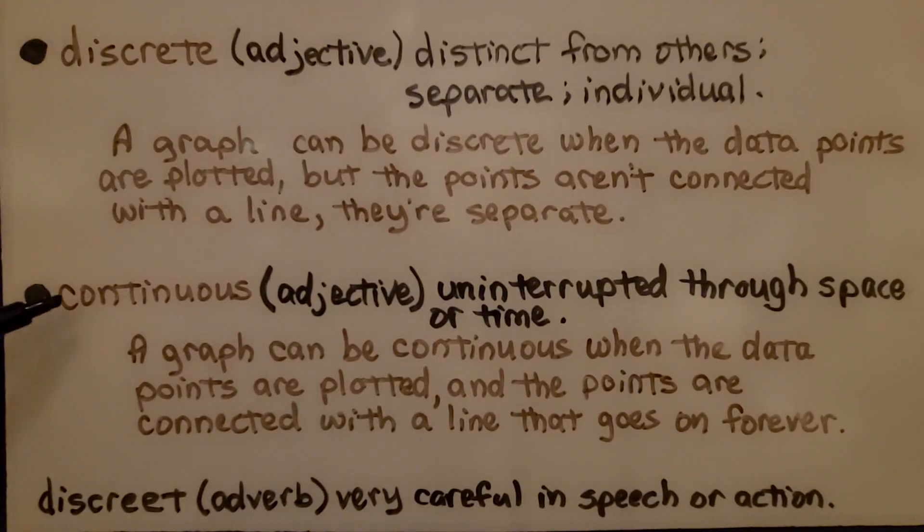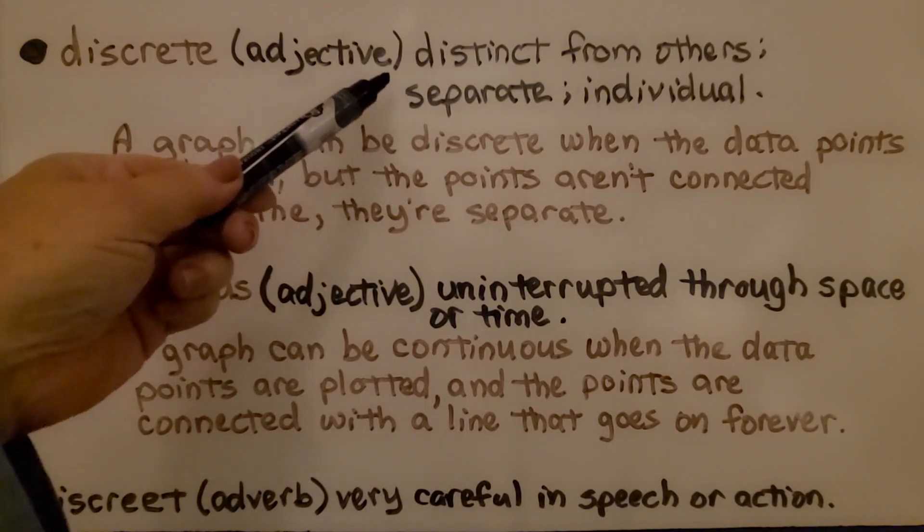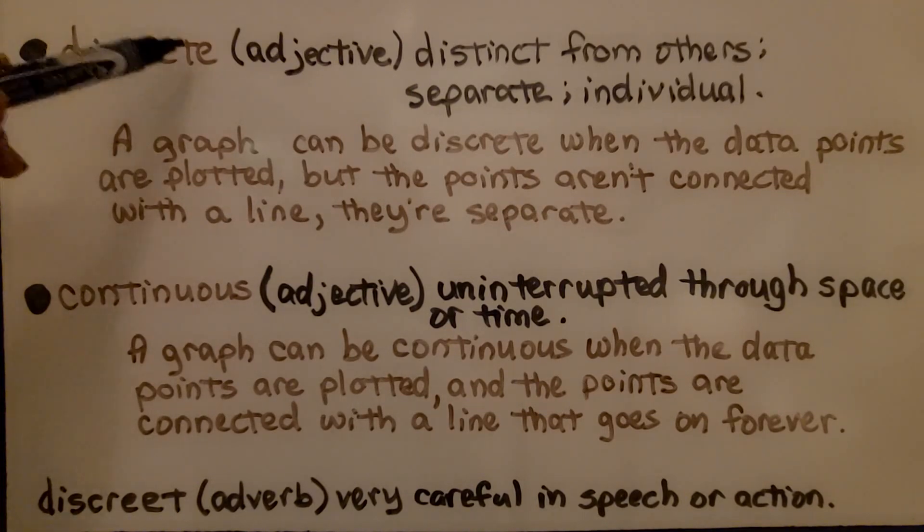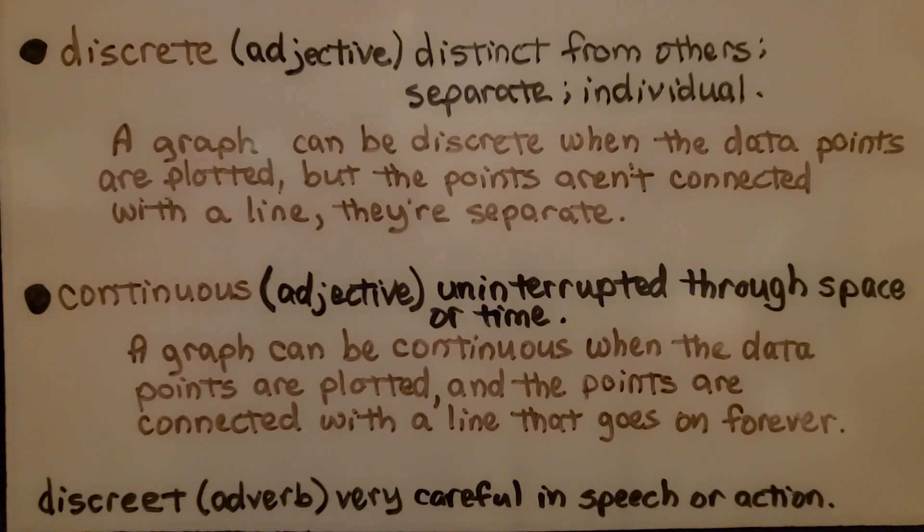Now I want to explain discrete and continuous to help you out. Discrete, an adjective, means distinct from others, separate, individual. A graph can be discrete when the data points are plotted, but the points aren't connected with a line, they're separate. Continuous, also an adjective, means uninterrupted through space or time. A graph can be continuous when the data points are plotted, and the points are connected with a line that goes on forever. And it'll have an arrowhead at the end, wouldn't it? Now this kind of discreet, notice it's spelled differently, E-T-E versus E-E-T, that's an adverb, that means careful in speech or action. Someone tells you a secret, and you're discreet and you're careful in your speech or action.